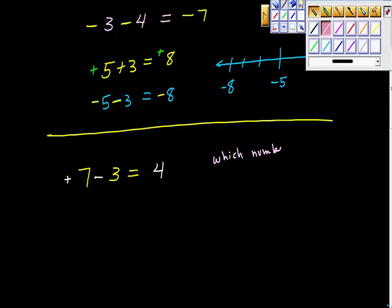Which number is farther from zero? Take its sign. That's all I'm going to do here. So I'm going to subtract. 7 minus 3 is 4. Then I'm going to look at these two numbers. Which number is farther from zero?